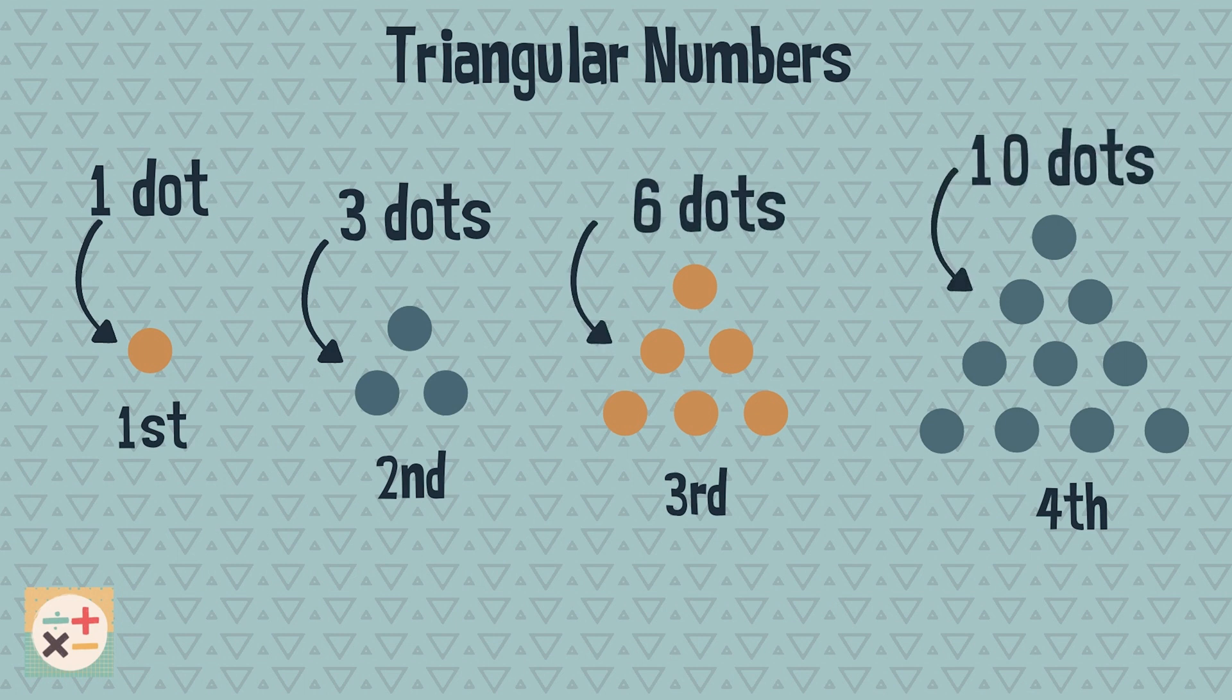You may have noticed that the number of dots on each side of the triangle is the same as the position number of the sequence. For example, the third triangular number has three dots along the base and three dots along each side.